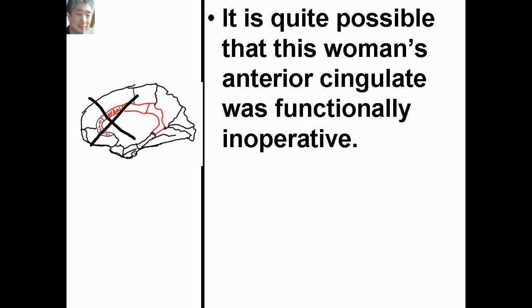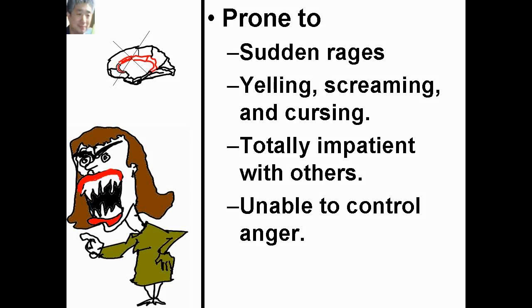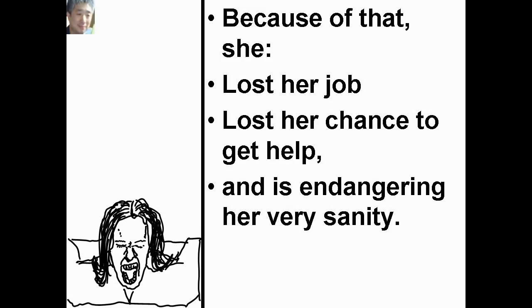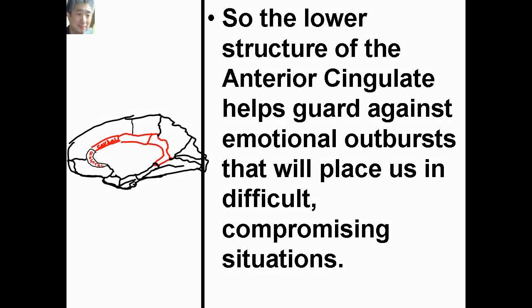It is quite possible that this woman's anterior cingulate was functionally inoperative. Prone to sudden rage, yelling, screaming, and cursing, totally impatient with others, unable to control anger — she was unable to control her temper at all. Because of that, she lost her job, lost her chance to get help, and is endangering her very sanity. So the lower structure of the anterior cingulate helps guard against emotional outbursts that will place us in difficult, compromising situations.